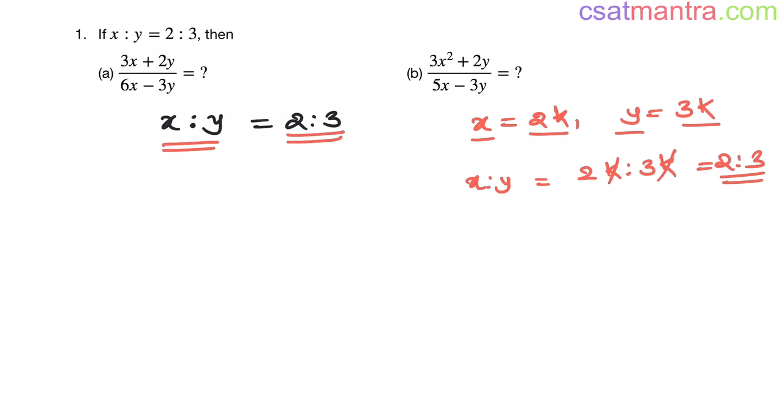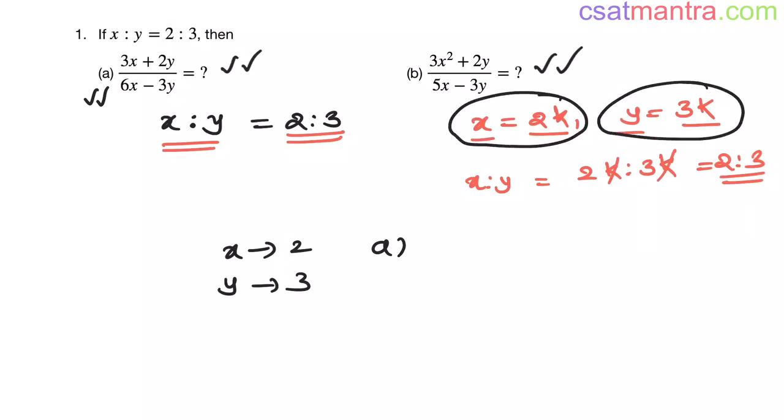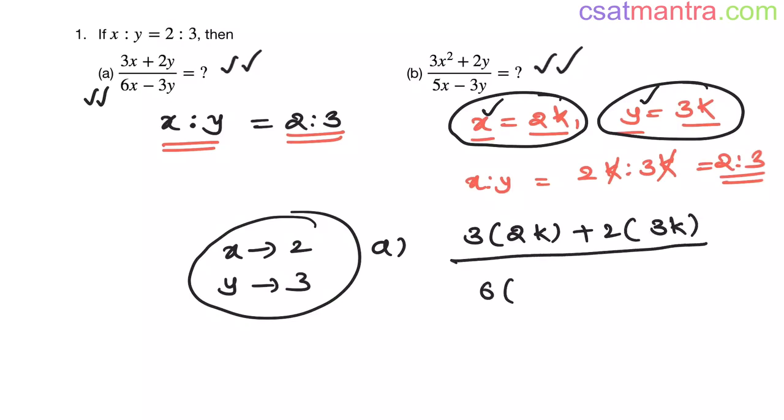Now I told you can substitute x as 2, y as 3 in this problem, so here starts your confusion. Just look at problem (a). x equals 2k and y equals 3k—these are the only meanings of x and y. We will come to this part later. Substituting x value as 2k and y value as 3k: numerator is over, now denominator—x value as 2k and y value as 3k.